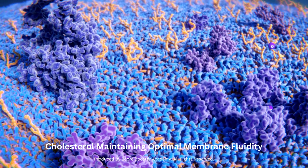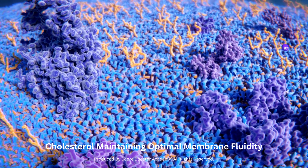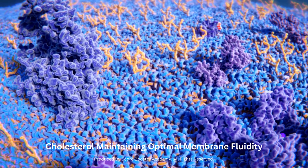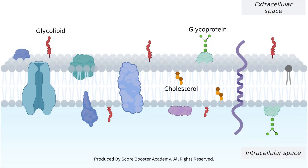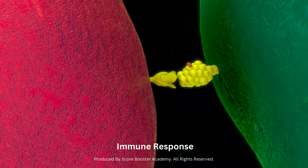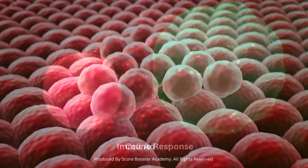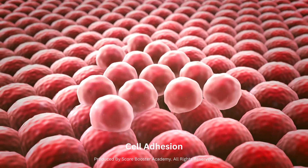Carbohydrates are present on the outer surface of the cell membrane in the form of glycoproteins and glycolipids. These carbohydrate chains play a role in cell recognition, immune responses, and cell adhesion.